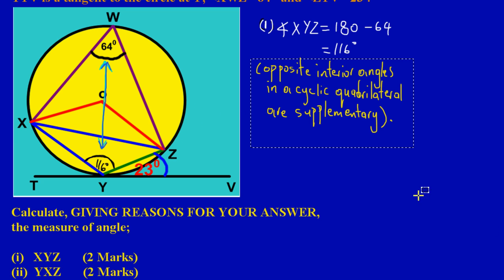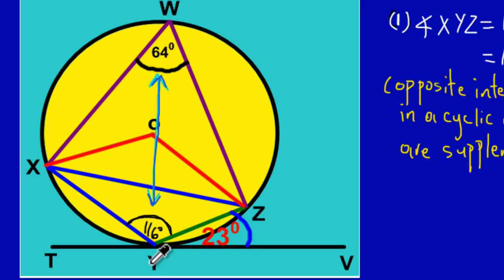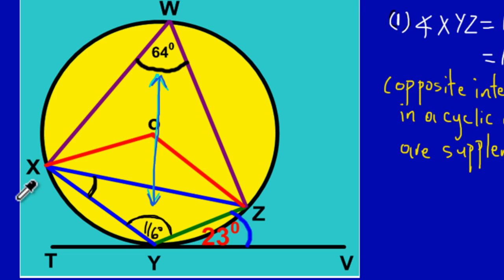Now in part 2, they're asking us to find angle YXZ. Let's identify that angle: starting at Y, going up to X, and back down to Z. The angle is located at point X — remember, the letter in the middle is where the angle is located. We have a special situation and we're going to look at another circle theorem.